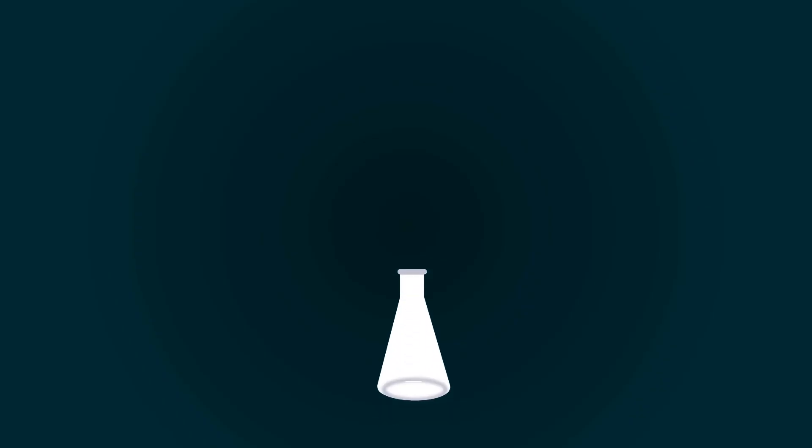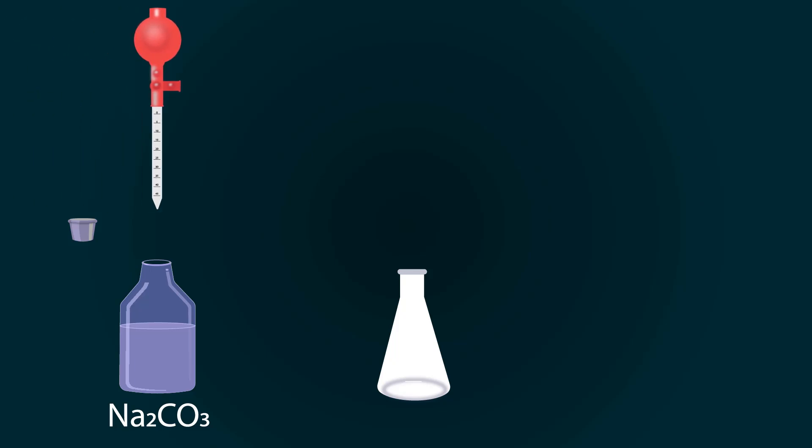Let's begin the procedure. First, take a conical flask and add sodium carbonate into it. You can add sodium carbonate into the conical flask with the help of a pipette. Pipette out 10 milliliters of sodium carbonate and put it into the conical flask.